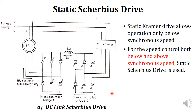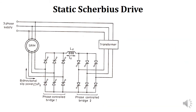Let's consider the circuit diagram of a static Scherbius drive. This circuit diagram very much resembles the static Kramer drive. The only difference is that instead of using a diode rectifier, a phase-controlled bridge is provided. There are two phase-controlled bridge circuits which are connected in anti-parallel — this is known as bridge one and this is bridge two.